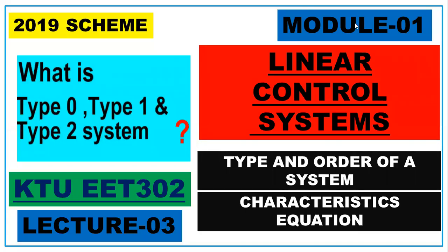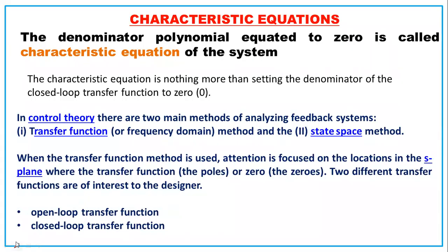In today's class we'll be studying about type and order of a control system, and what we mean by characteristic equation. Type is normally referred to as type 0, type 1, etc. Last class we studied what is a transfer function, how to form a closed-loop transfer function G(s) / (1 + G(s)H(s)), the effect of feedback, and what are poles and zeros.